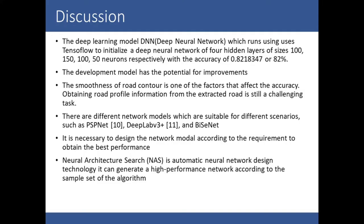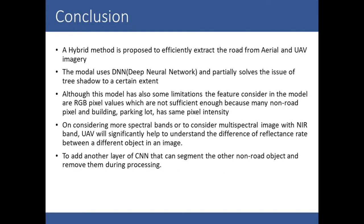The model has potential for improvement. The smoothness of road contours is one of the factors affecting accuracy when obtaining road profile information from the extracted road, and this remains a challenging task. There are many different algorithms and models suitable for different scenarios — like ESPNet, DeepLab, and BiSeNet — and it is necessary to design the network model according to requirements to obtain the best performance.